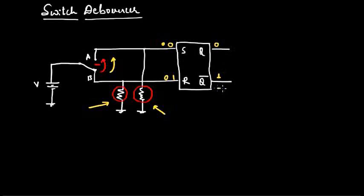When center contact of the switch reaches point A, S will become 1 and R will become 0. In this case the latch is set. So we will have 1 and 0 at the output.